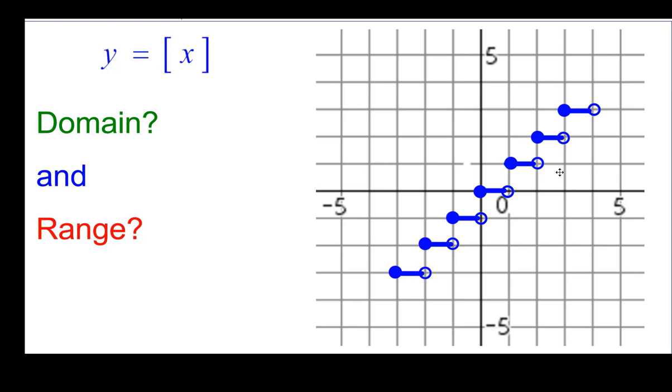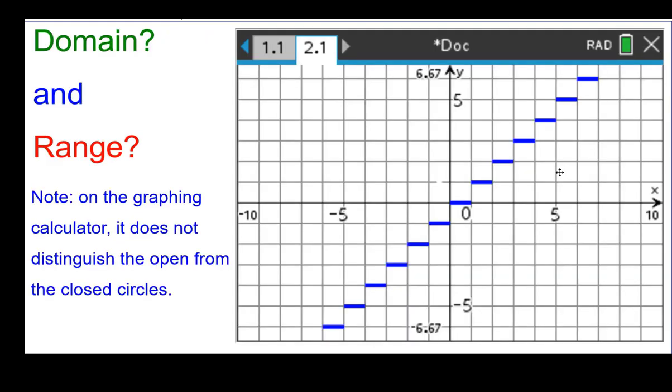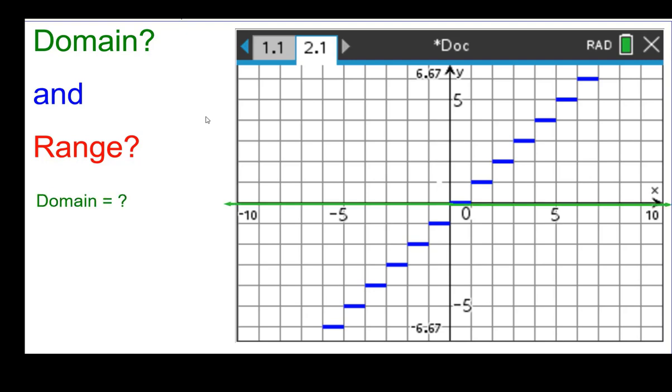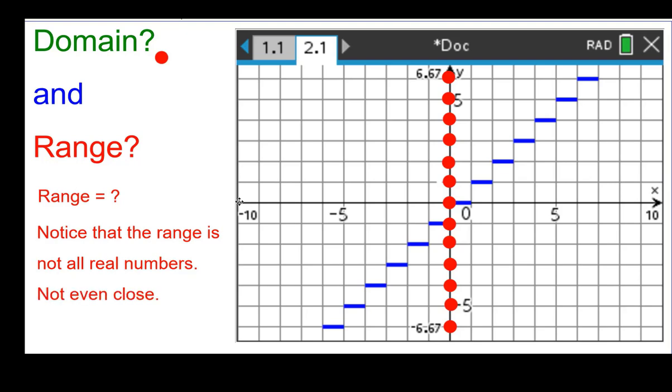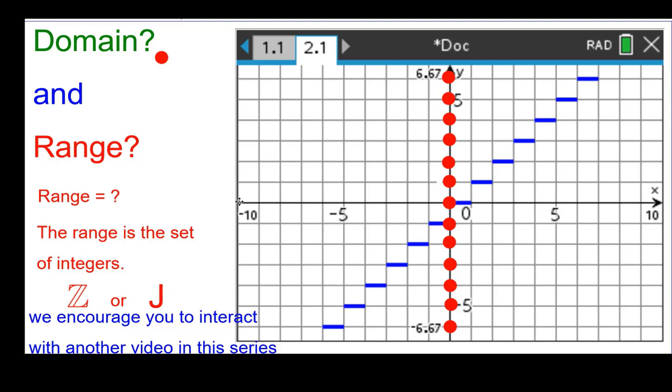So let's finally talk about domain and range for this. On the graphing calculator, notice it does not distinguish open from the closed circles from the picture. It does when you trace, but not from the picture. So the domain is actually going to be all real numbers. Every real number has a y value above or below it. So it is all real numbers. The range is not all real numbers, because those are the points where the y coordinates are. It's not even close to all real numbers. The range is the set of integers, the positive and negative whole numbers including 0. So we write that either as a capital script Z or capital J for the set of integers. We encourage you to interact with another video in this series.